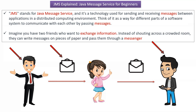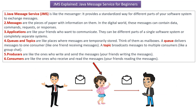Imagine you have two friends who want to exchange information. Instead of shouting across a crowded room, they can write messages on a piece of paper and pass them through a messenger. JMS is like that messenger — it provides a standardized way for different parts of your software system to exchange messages.